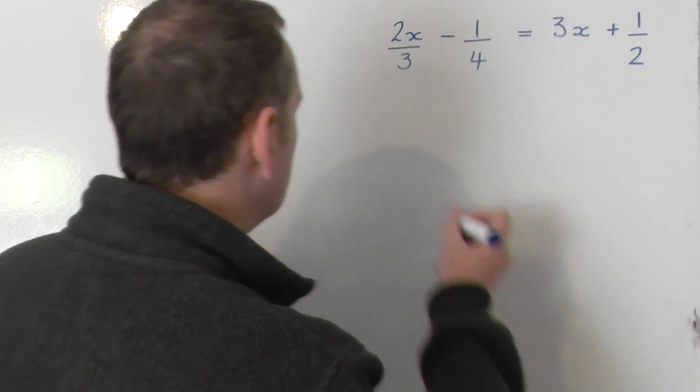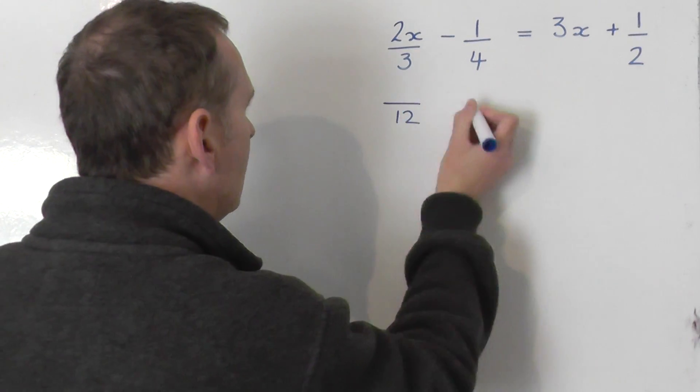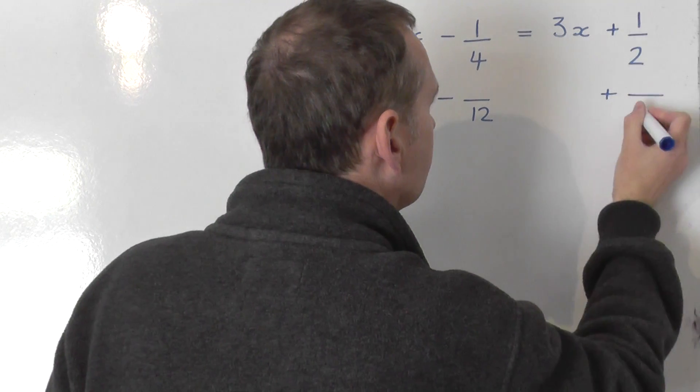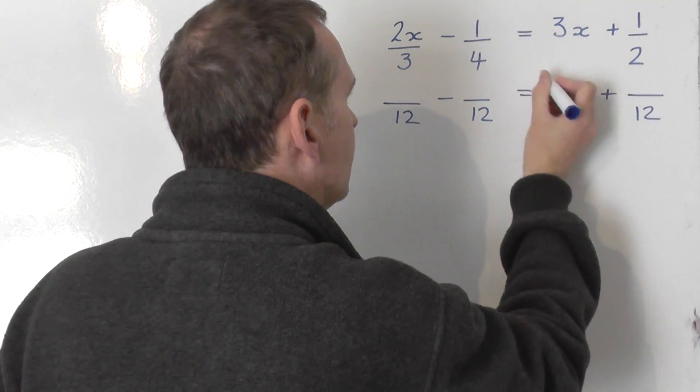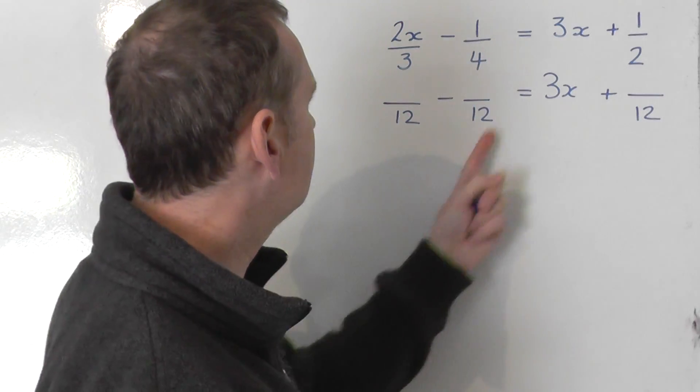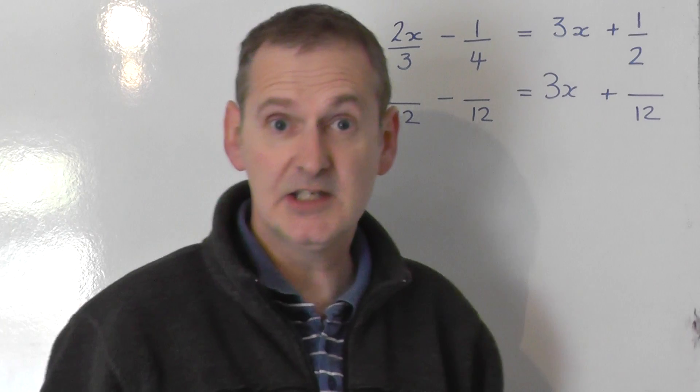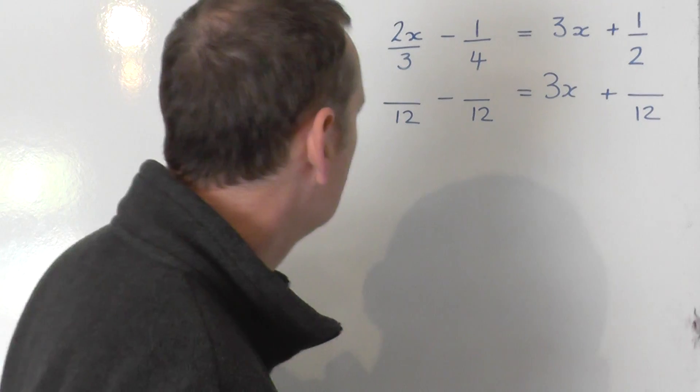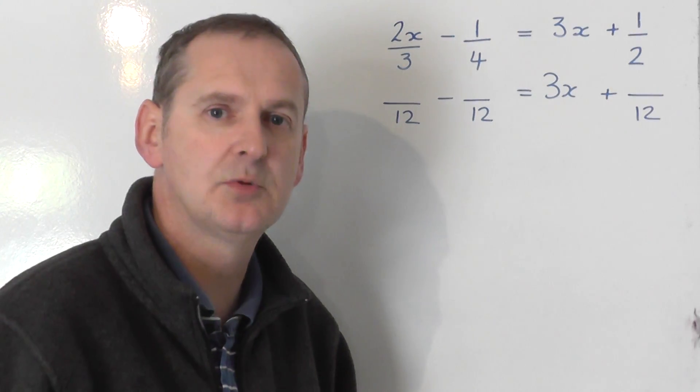So what I'm going to do is change all these bottom lines of the fractions, and there's three of them, into 12s. I'm going to leave the 3x exactly unchanged. And I'm just going to change these three fractions to identical fractions, but which have 12 on the bottom line, which is the LCM of 3, 4, and 2. The smallest number that 3, 4, and 2 go into, which is 12.